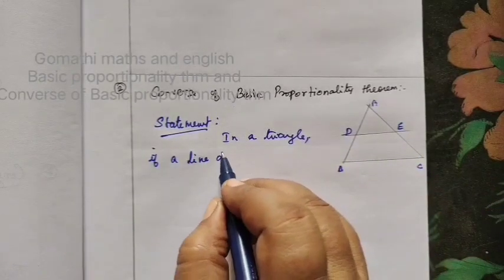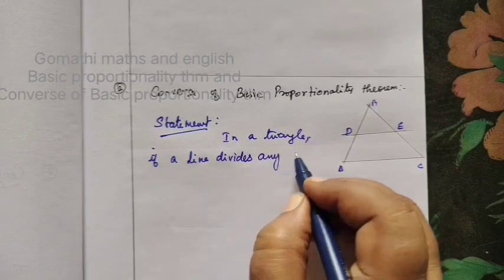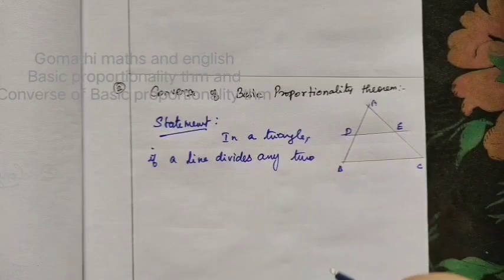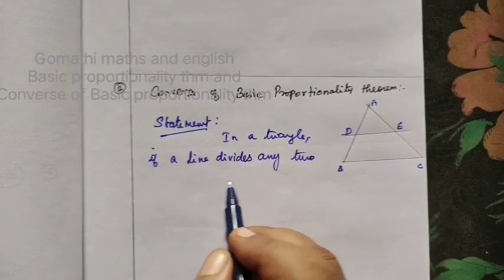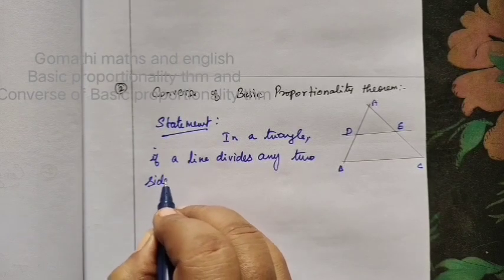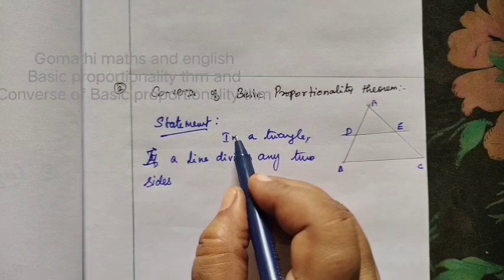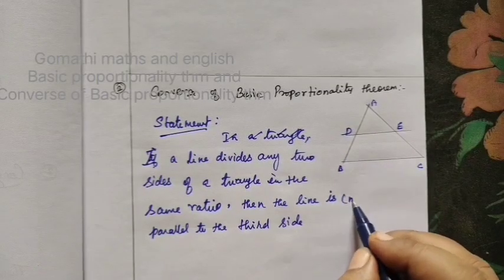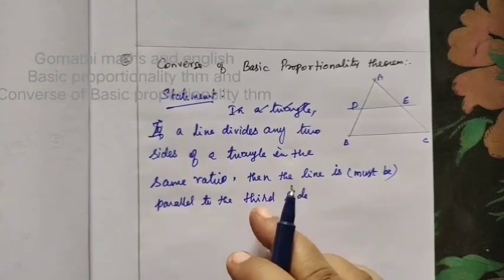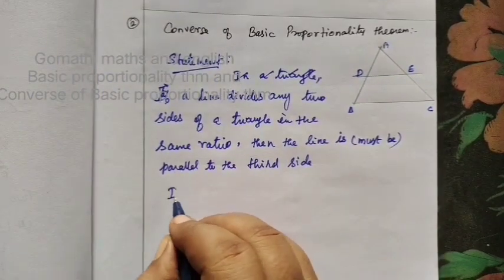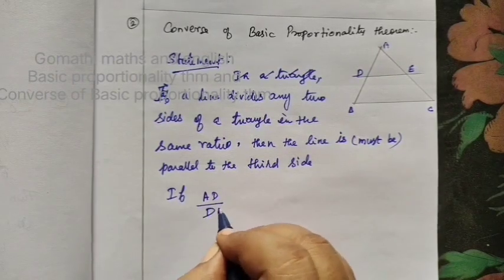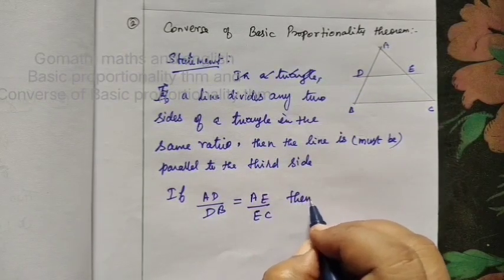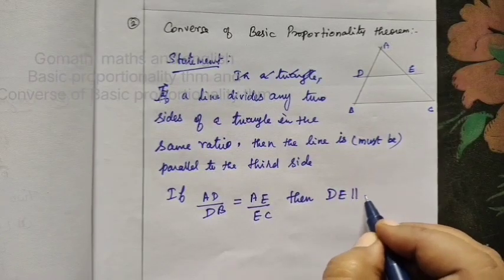If a line DE divides any two sides of a triangle in the same ratio, then that line must be parallel to the third side. So if AD by DB equals AE by EC, then DE is parallel to BC.